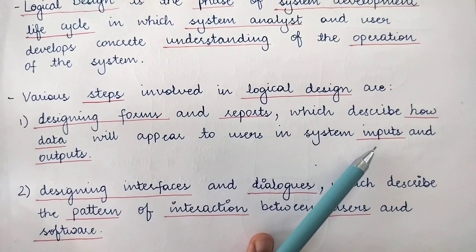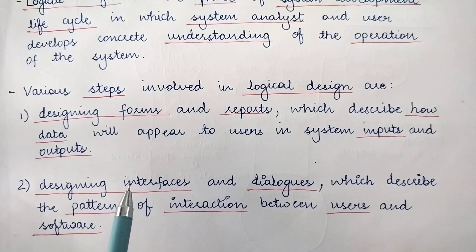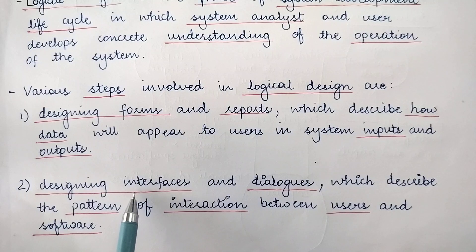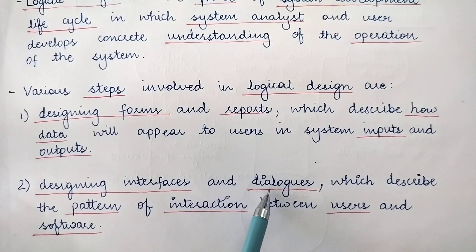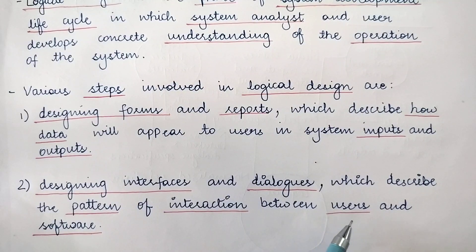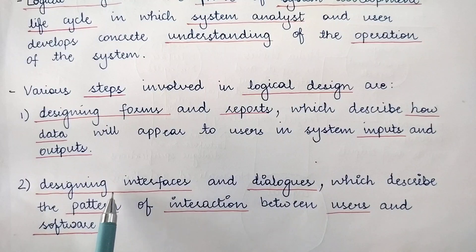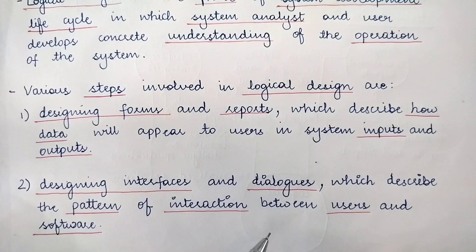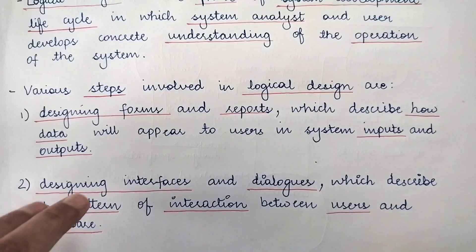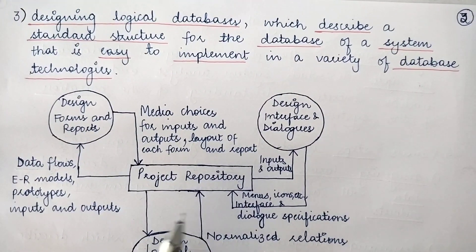The second step is designing interfaces and dialogues. Whenever you design a website or an application, the most important thing is having an interface — you need to provide interaction between the end users and the system. This interaction is provided through an interface, so it is very important to design interfaces and dialogues, which describe the pattern of interaction between the user and the software.